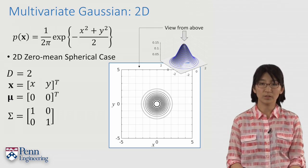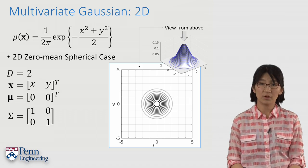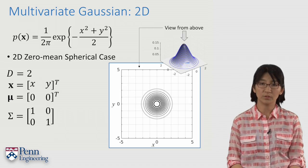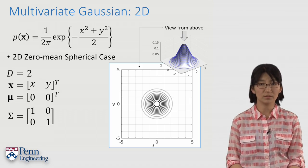Now, as we did for the 1D Gaussian, let's briefly talk about what other Gaussians with different means and different covariance matrices look like.